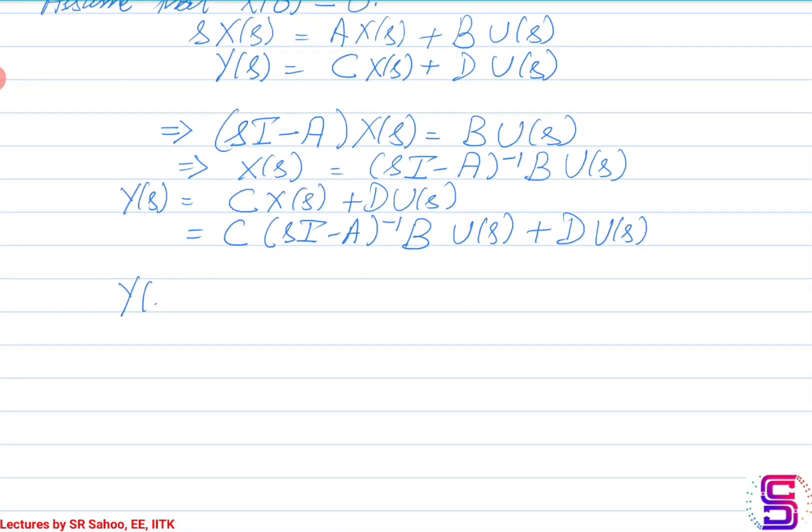What I get is y(s) equals [C (SI minus A) inverse B plus D] u(s). This is, in general, the transfer matrix multiplied by u(s).